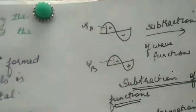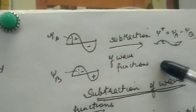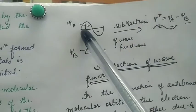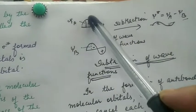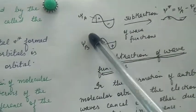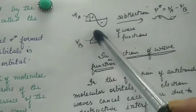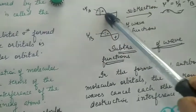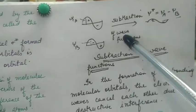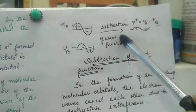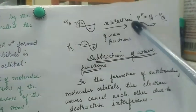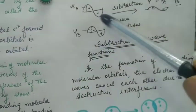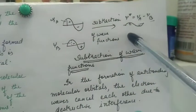In subtractive interference, the wave function of one atom and the wave function of the other atom have opposite signs — one is plus, one is minus. As a result, the resulting wave function is obtained by cancellation of the wave functions.